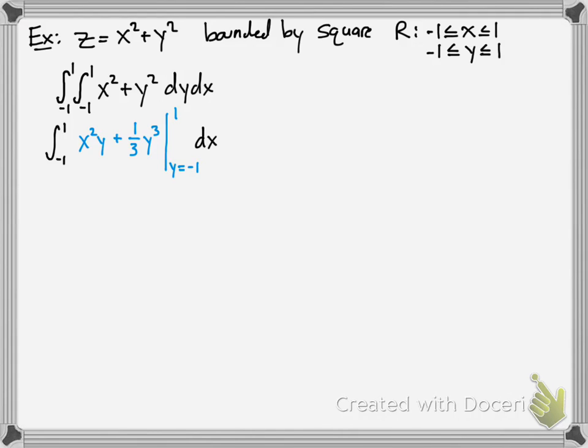Then you take the antiderivative of y squared with respect to y. You get 1 third y cubed. Evaluate it from the limits of integration, which is negative 1 to 1. Solve for that. Using the fundamental theorem of calculus f of b minus f of a, you simplify your work. You get 2x squared plus 2 thirds.